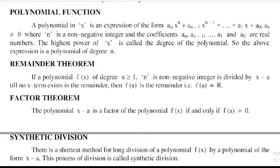a_n ≠ 0, where n is a non-negative integer and the coefficients a_n, a_{n-1}, ..., a_1, and a_0 are real numbers. The highest power of x is called the degree of the polynomial.